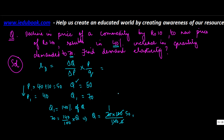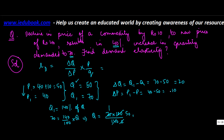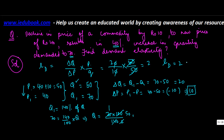Since we have both values, Delta Q equals Q1 minus Q, which is 70 minus 50, equals 20. We take the absolute value, so Delta Q equals 20, Delta P equals 10, original price P equals 50, and Q equals 50. These cancel out, so elasticity of demand equals 2.